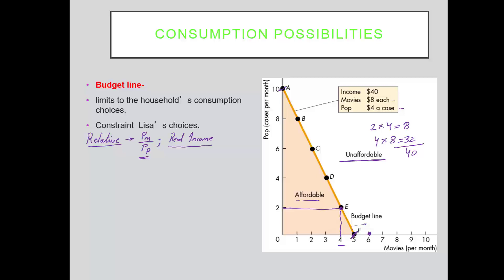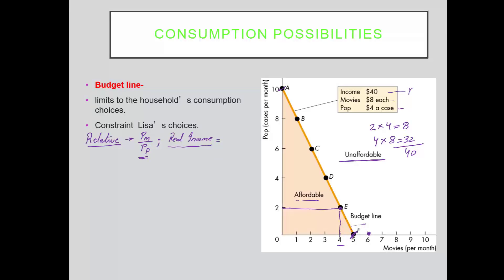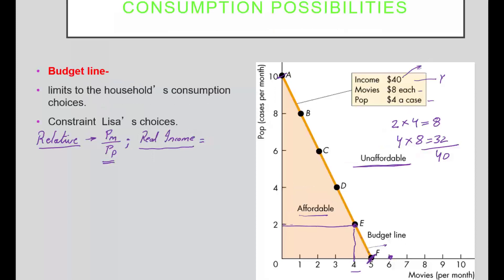These are relative prices. How do we define real income? Nominal income is in dollar terms — forty dollars. Suppose your income was doubled to eighty dollars, but the price of movies and the price of pop were also doubled. In that case there is no change in the budget constraint. Think about how much your income increases compared with how much the prices of goods increase. Real income in terms of pop is Y over the price of pop, and real income in terms of movies is Y over the price of movies.